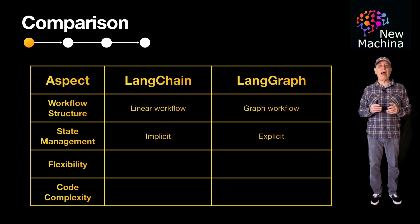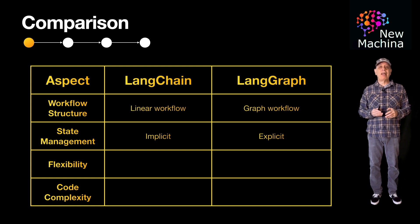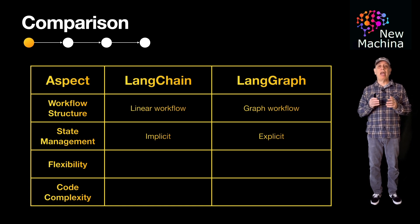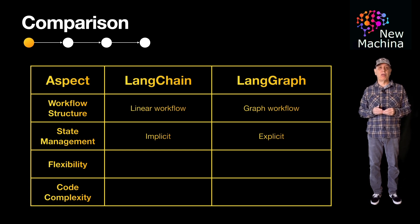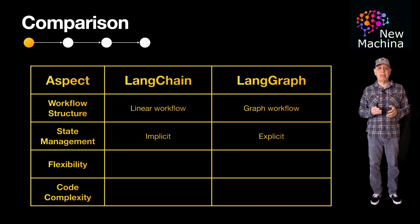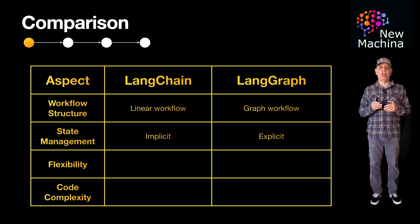Alternatively, LangGraph has explicit state management. When we say it has explicit state management, we mean that LangGraph requires developers to define, manage, and control the state of the workflow explicitly throughout the execution. This approach gives developers fine-grained control over data flow, task dependencies, and intermediate results, making it suitable for complex workflows with branching, looping, or multi-agent interactions.